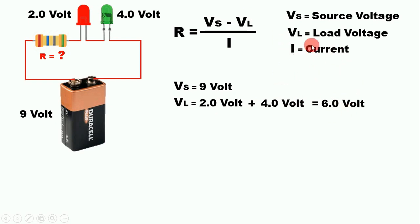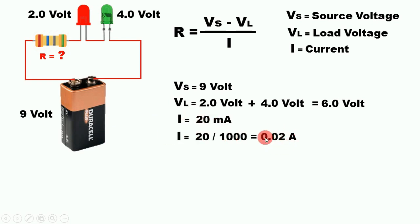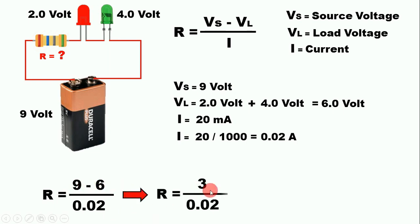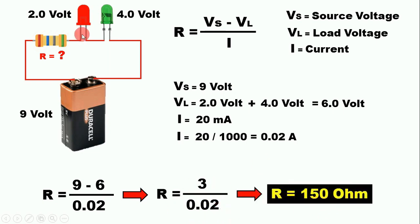Now we find the current. In a series circuit the current value is the same for all components, so we use the highest current value of the LED, which is 20 milliamperes, converted to 0.02 amperes. Putting the values into the formula: R = (9 - 6) / 0.02 = 3 / 0.02 = 150 ohms. So the resistor to use in this circuit is 150 ohms.